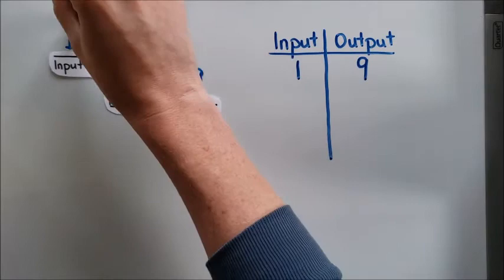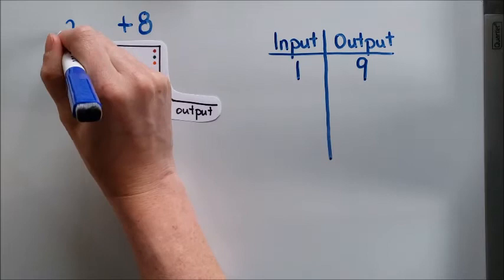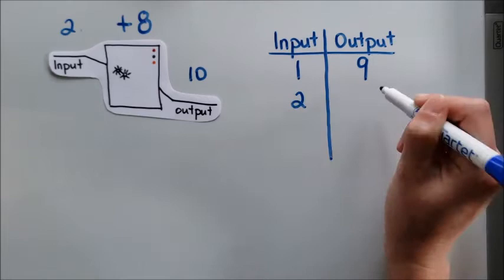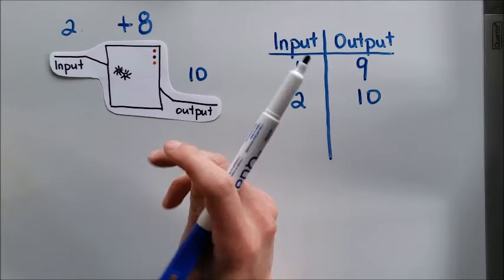Now if I change my input, my output changes as well. So if I input two, my output is going to be ten, because two plus eight is going to give me ten.